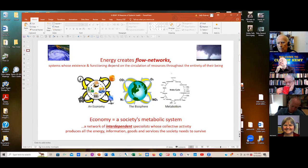The first thing to remember is that energy is self-organization theory. Energy not only creates organization, it creates particular types of organizations which are flow networks, frequently horribly named dissipative structures. These are systems whose existence and function each depend on circulation of resources throughout the entirety of their being. In this view, this gives an explanation for the idea that economy is really a society's metabolic system, a network of interdependent specialists whose collective activities produce all the energy, information, goods and services that society needs to survive.